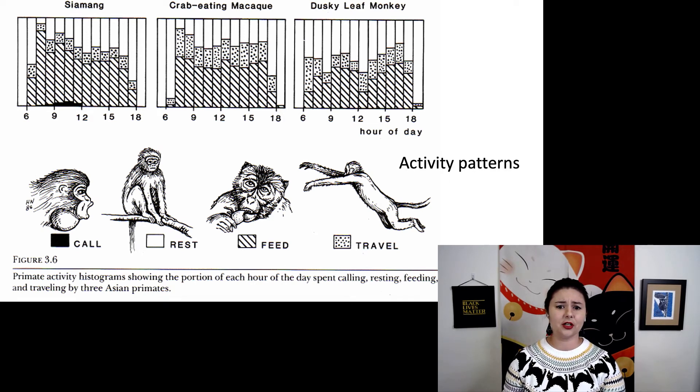Then we also can look at our crab-eating macaque. They spend a decent amount of their time traveling. Macaques eat just anything, so they need to spend a lot of time traveling to find all the various different things they're going to eat. Our dusky leaf monkey, they spend a decent amount of time feeding and a little bit of time traveling. But notice how much more time they spend resting than our other species. You'll also notice that at different periods of the day, species are doing one activity more likely than the other.